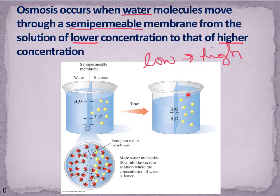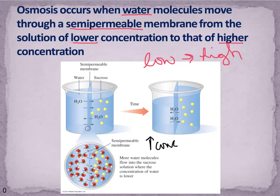We have more volume on the right than on the left. If the solution on the left is our low concentration side, as we remove solvent molecules we actually see an increase in the concentration on the left. On the right we have a decrease in concentration because we've increased the number of solvent molecules. In this case, if we're dealing with pure water on the left, it's never actually going to reach the same concentration because there are no solute molecules on the left — but it's going to try, and that's why those molecules are flowing from left to right. Always the solvent, never the solute molecules.